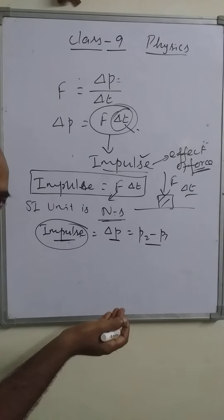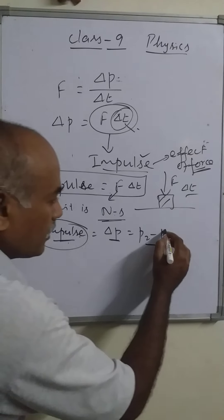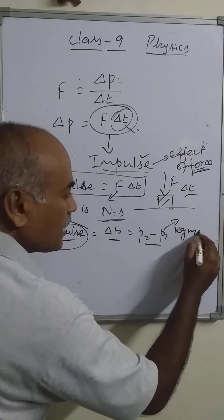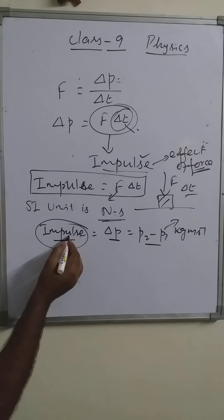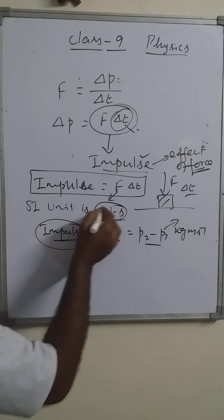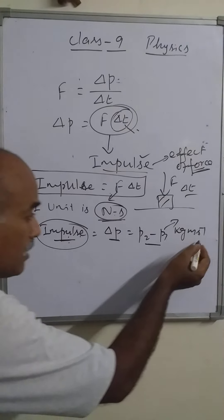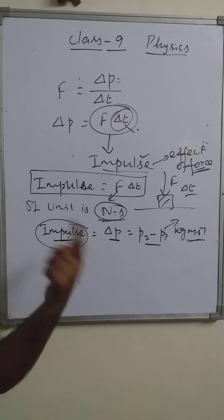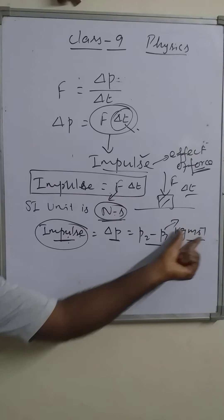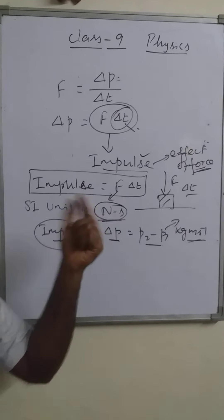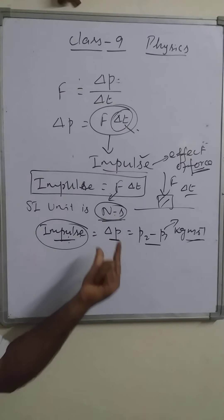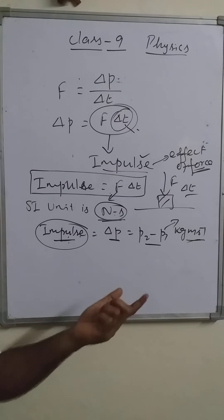For momentum we have the SI unit kg·m/s. So Newton-second is also an SI unit of impulse. For impulse you can give both units: Newton-second or kg·m/s. And for momentum also we can give both units: kg·m/s or Newton-second. Any unit can be given.